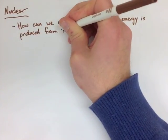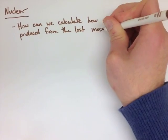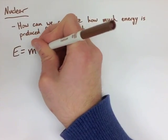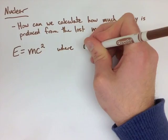where E is the energy in joules, M is the mass in kilograms, and C is the speed of light, or 3.0 times 10 to the 8 meters per second.